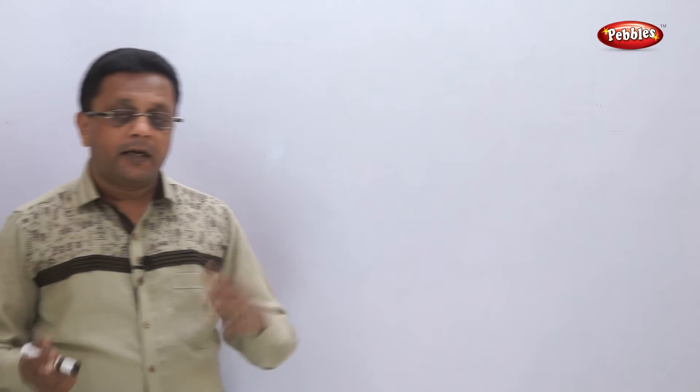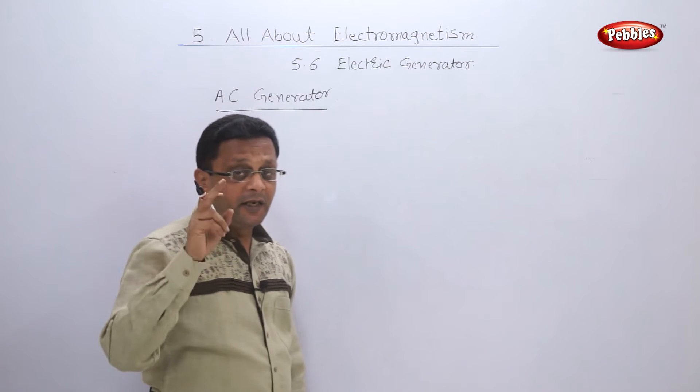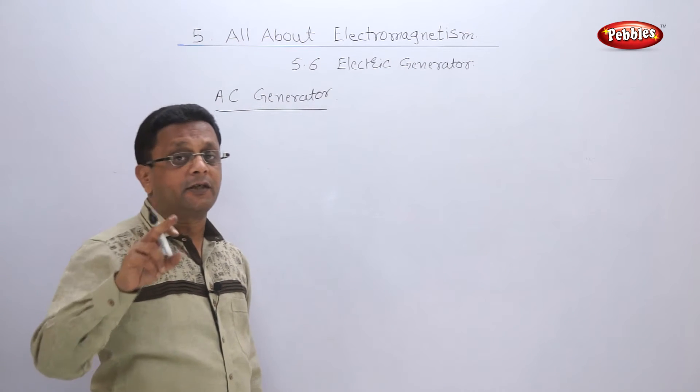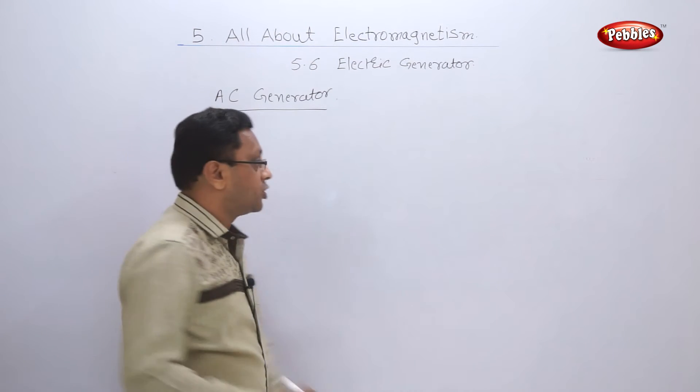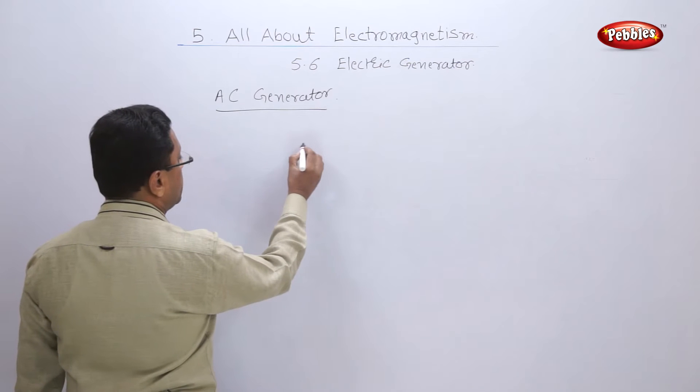Generators are of two types: one is the AC generator and one is the DC generator. The DC generator is also called a dynamo. The construction of the DC generator is just the same as an electric motor. The AC generator is slightly different. I am taking both generators at a time because there is only one difference between their constructions.